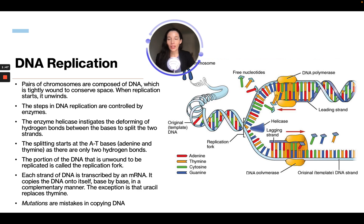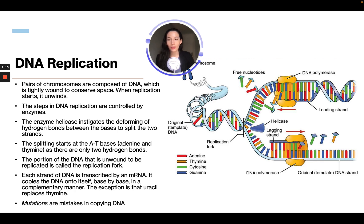In DNA replication, pairs of chromosomes are composed of DNA which is tightly wound to conserve space. When replication starts, it unwinds. The steps in DNA replication are controlled by enzymes.